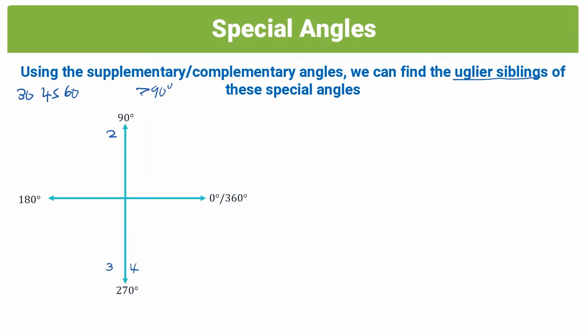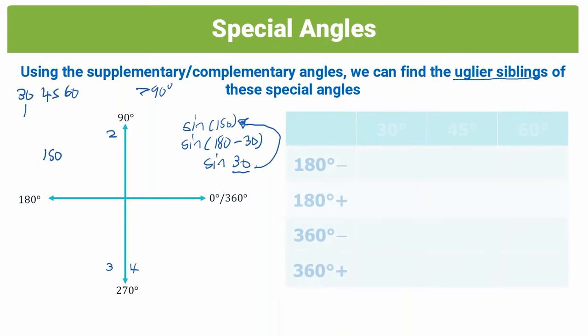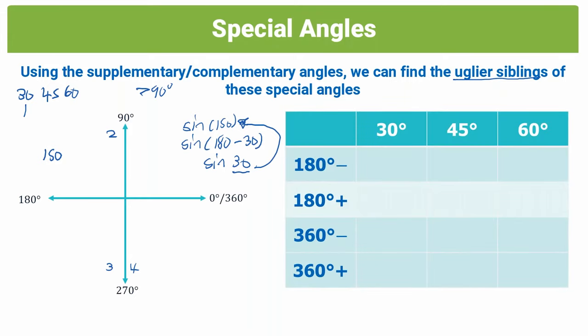So for example, if you had to look in quadrant 2, an ugly sibling of 30 would be 150. And why is that? Because we know that, let's say, sine 150, right, is the same as sine 180 minus 30, which is the same as sine 30. So this 30 here is related to that 150 in some way, and I like to refer to them as the ugly siblings of the special angles. So I've just put up a table here, so we can try to extract all the ugly siblings of 30, 45, and 60.